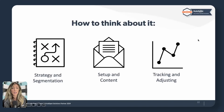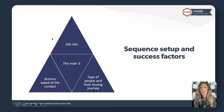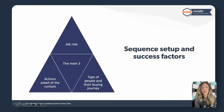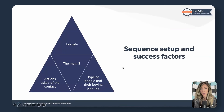Step three is tracking and adjusting. The success of sequences is going to vary based on job role — are these BDRs, sales pros, or account managers? What type of people are they reaching out to and what does their buying journey look like? If your industry largely bases buying decisions on referrals and social proof, cold outreach is going to be difficult. You might need to switch to inviting people to an event rather than asking for a meeting. These are important things to think critically through with your team, because they vary wildly based on your industry and what you're asking your audience to do.